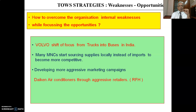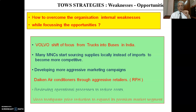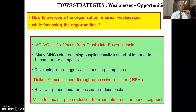You can also develop a very aggressive marketing campaign. An excellent example is Daikin air conditioners — a Japanese brand with very poor brand recall in India. They decided to move along with aggressive retailers and were able to garner a good market share in a very short span of time. You can also review your operating processes and reduce costs so that you are able to expand your market segment. For example, Vico Toothpaste was operating in a premium segment at a high price, but the market size was limited. Vico decided to reduce its price through aggressive cost reduction in operating processes, and was able to expand the premium market segment.